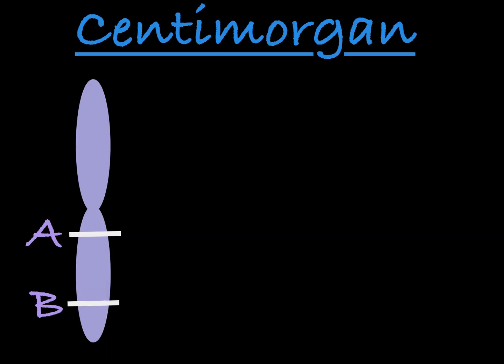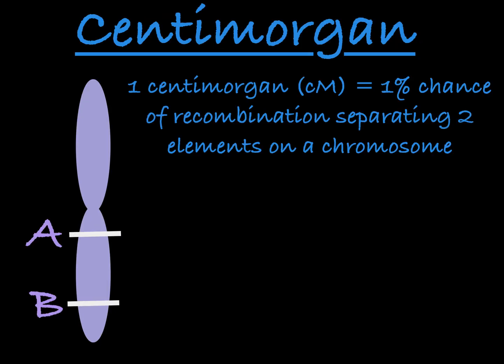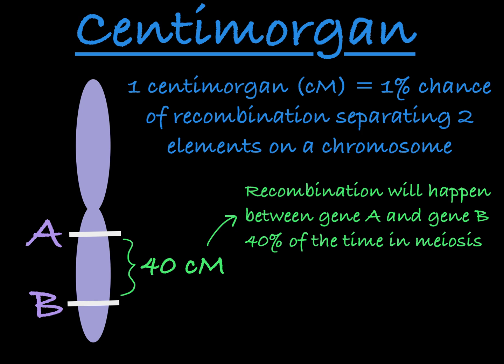One centimorgan is equal to a 1% chance that recombination will separate two elements on a chromosome. The greater the number of centimorgans between two positions on a chromosome, the greater the chance of recombination occurring between those positions. For example, if two genes are 40 centimorgans apart, we would expect recombination to occur between those two genes 40% of the time in meiosis.